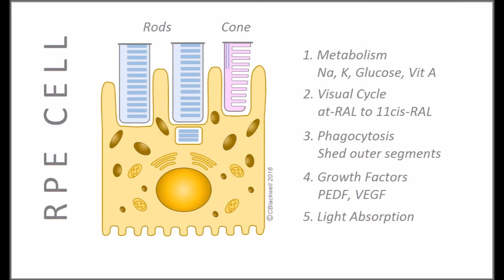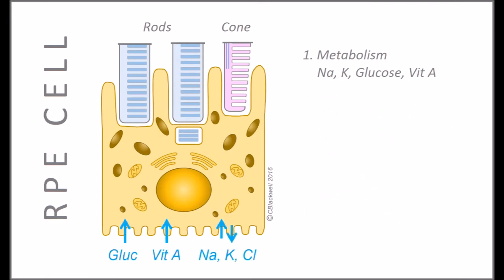Here is a general outline of what they do. First, metabolic support. RPE cells control the transport of different important ions and nutrients like sodium, potassium, glucose, and vitamin A from the bloodstream.